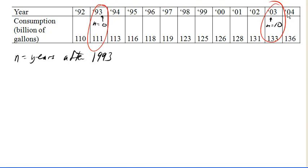So P0 is 111 billion gallons. And P10, the amount, the consumption after 10 years is 133.